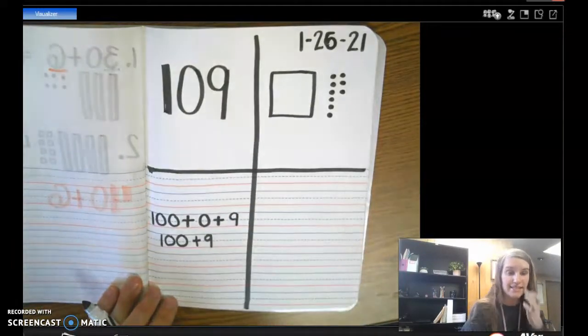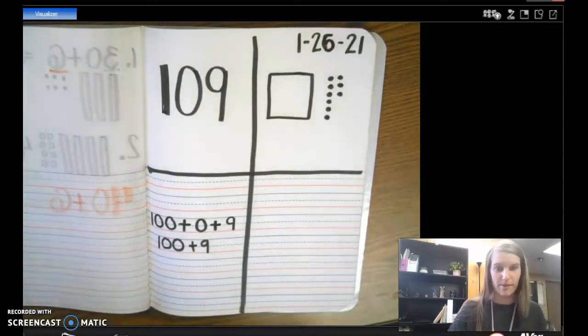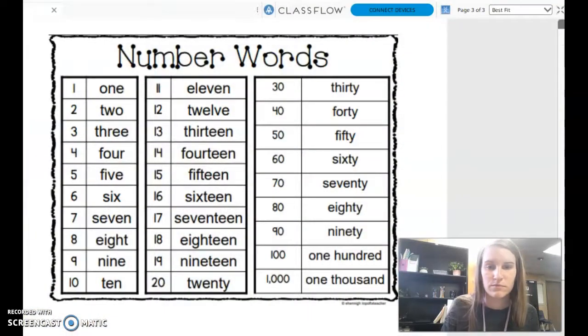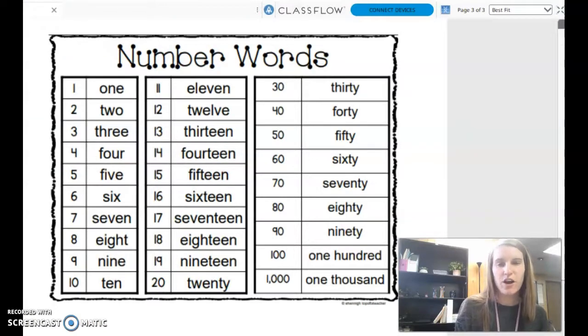And then the last thing is word form. So let me pull up my word wall. See if you can put your finger on the number 100. This is the number 100, so this is the word form of 100.